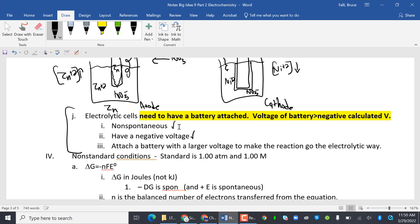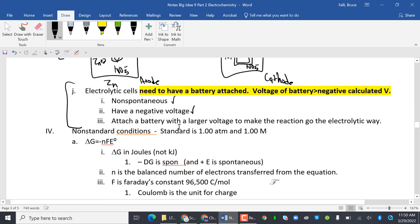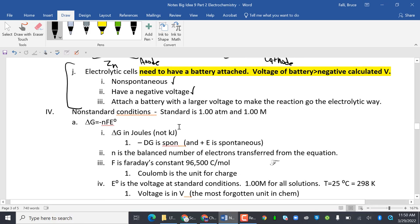Sometimes we have non-standard conditions. Standard conditions will be one atmosphere and one molar. First thing we're going to look at is looking at some delta G's and some E's. Delta G is in joules, not kilojoules. To remind you, a negative delta G is spontaneous, and a positive E is spontaneous.